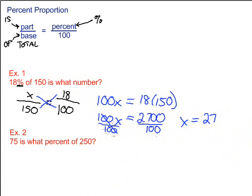Let's take a look at a second example. 75 is what percent of 250? Again, our problem is going to start out with the skeleton of a proportion. 100 is on the bottom here because it always is. Then we start looking at our problem. What are we given?